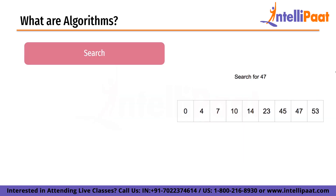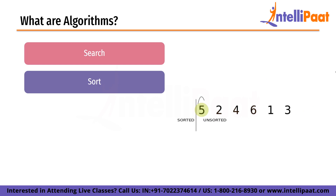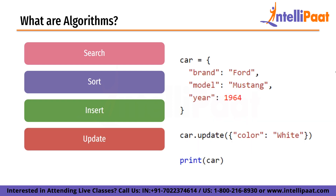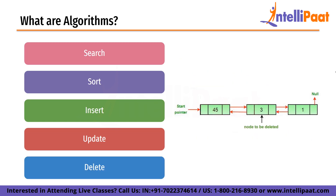Starting with Search — an algorithm to search an item in a data structure. Sort is an algorithm to sort items in a certain order. Insert is an algorithm to insert an item in a data structure. Update is an algorithm to update an existing item in a data structure. And finally, Delete is an algorithm to delete an existing item from a data structure.